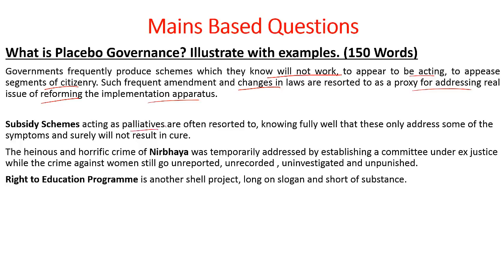What are the examples? Subsidy schemes acting as palliatives are often resorted to, knowing fully well that these only address some of the symptoms and surely will not result in the cure. We have come up with a number of subsidies — in the form of agricultural subsidy — and recently Punjab, Karnataka, and Maharashtra governments have all given loan waivers. Ultimately all that they are doing is disrupting the entire macroeconomic foundations — giving more loan waivers could have macroeconomic problems, but they want the immediate effect. The second example: the horrific crime of Nirbhaya was temporarily addressed by establishing a committee under ex-Justice, while crimes against women still go unreported, unrecorded, uninvestigated, and unpunished. TSR Subramaniam says when a grievous act is done, a committee is appointed, it gives recommendations, but those recommendations are not actually implemented — the government just comes up with a law as a dole.